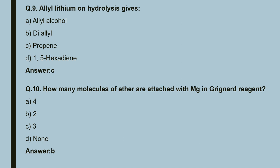Question number 9: allyl lithium hydrolysis gives — allyl alcohol, diallyl propene, or 1,5-hexadiene. The correct answer is C, that is propene.